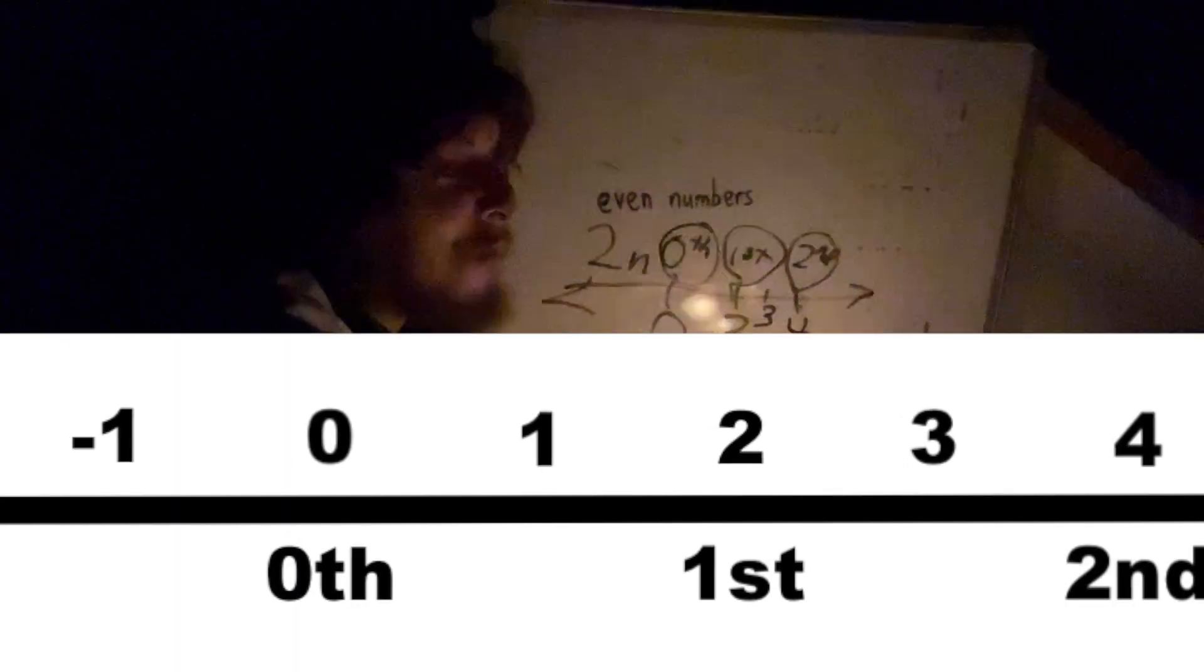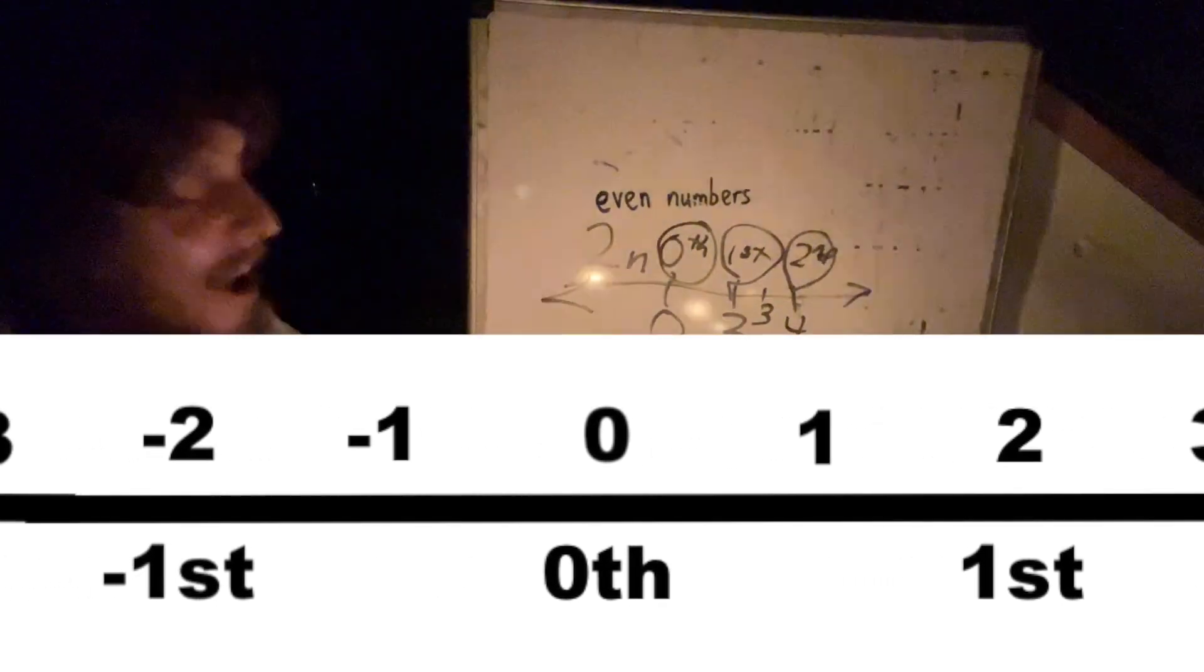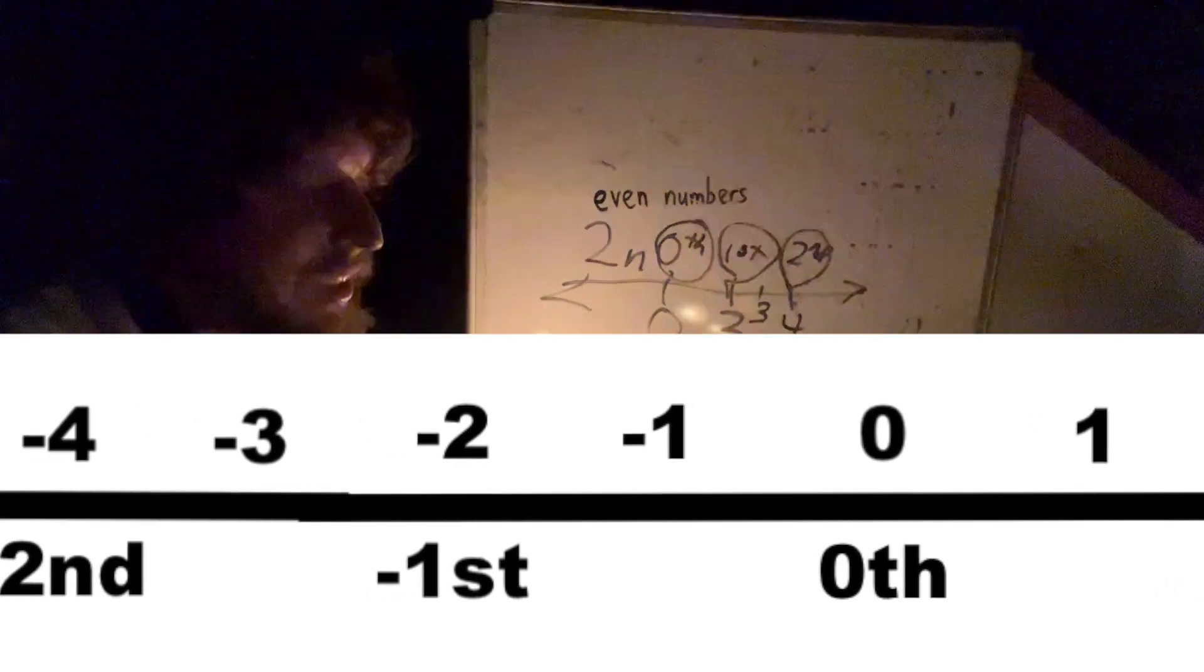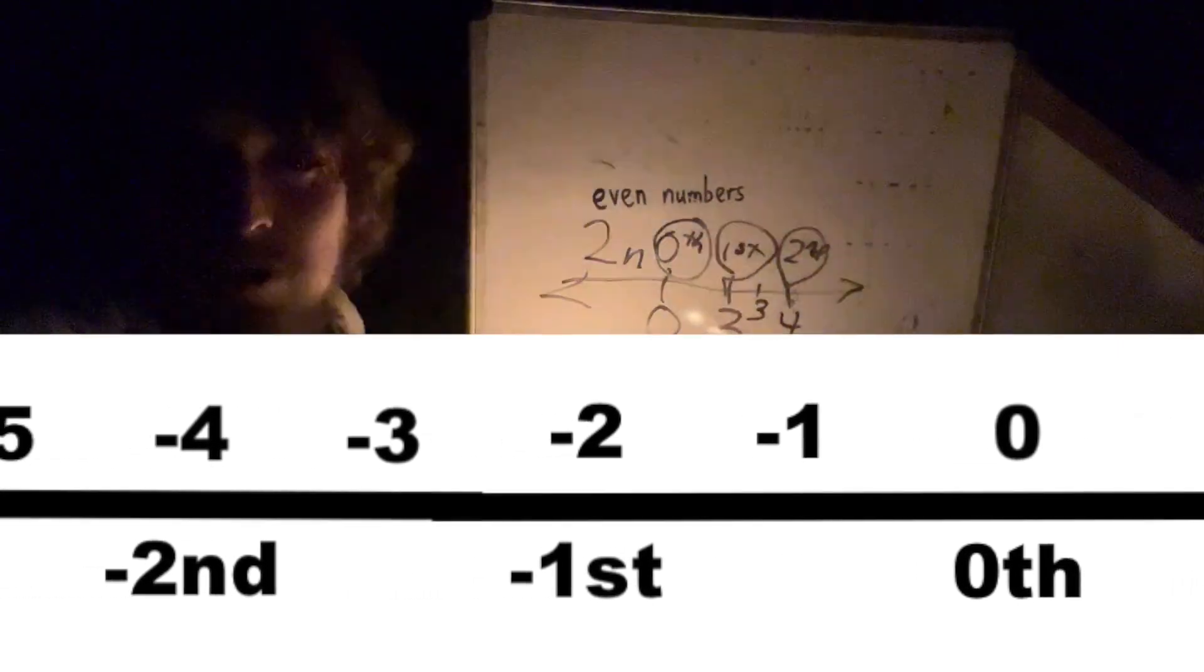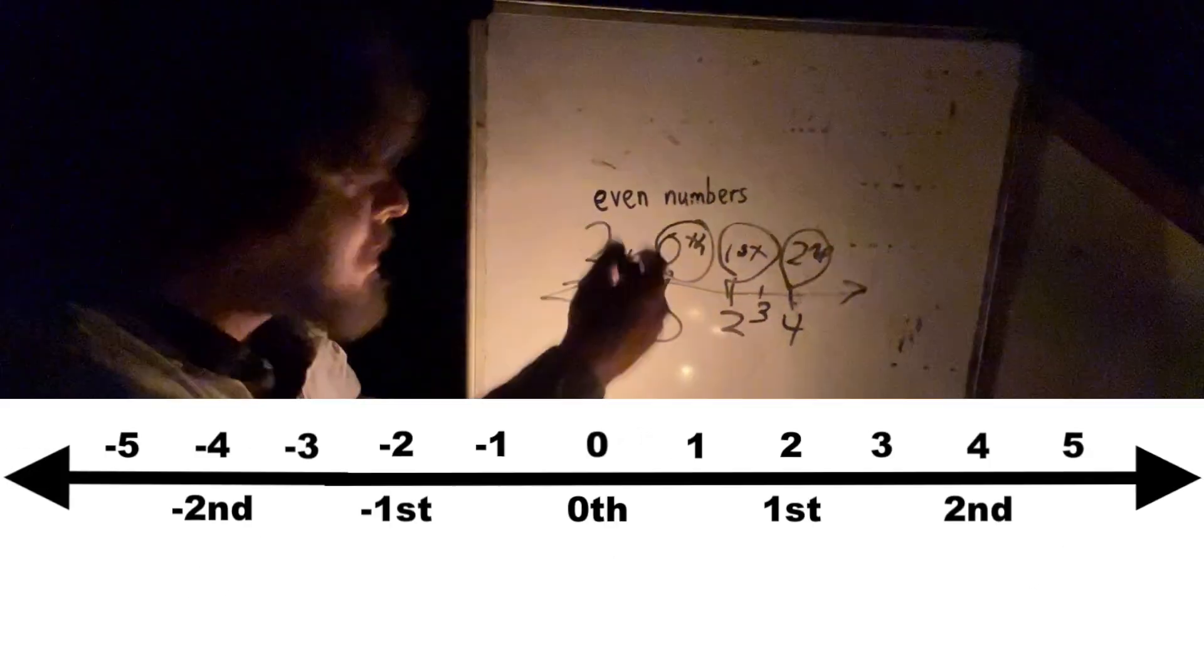Now, the one and a half-th even number is not going to be a commonly encountered concept, but I can more likely imagine coming across something like the negative first or negative second even number.